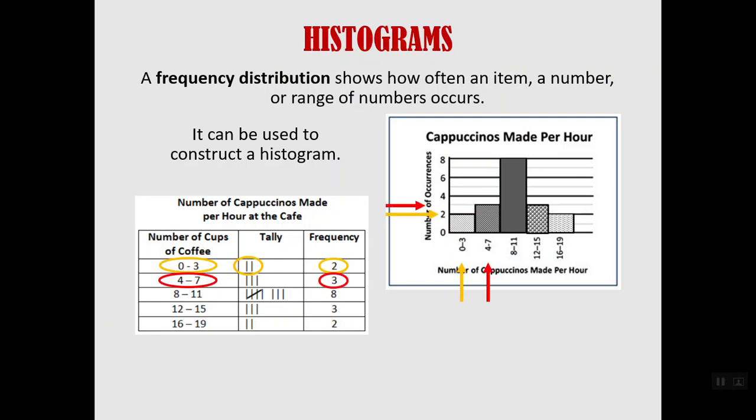For four to seven cups of cappuccino our tally is three. And so you can see you've got a four to seven range on the histogram and the bar goes up to three. The same with the rest of our categories.